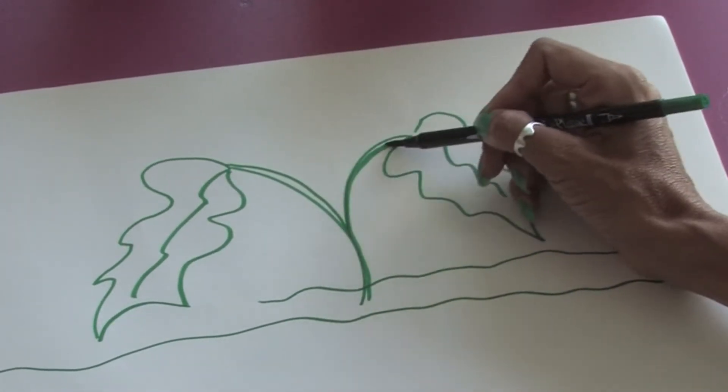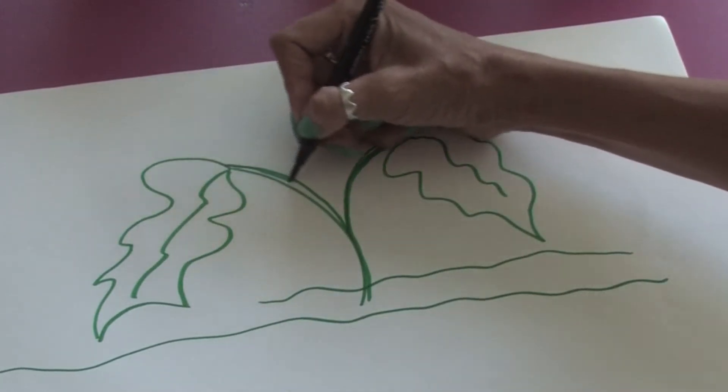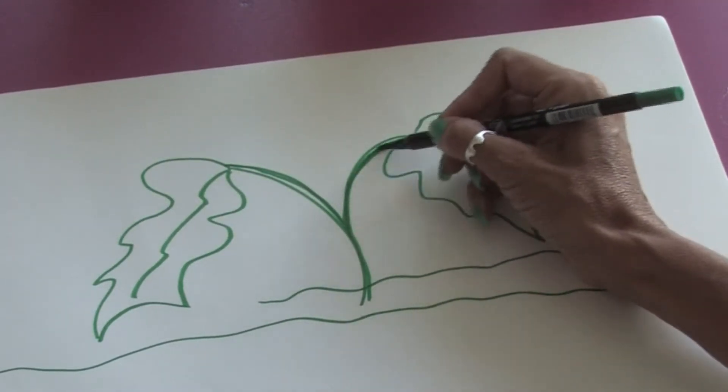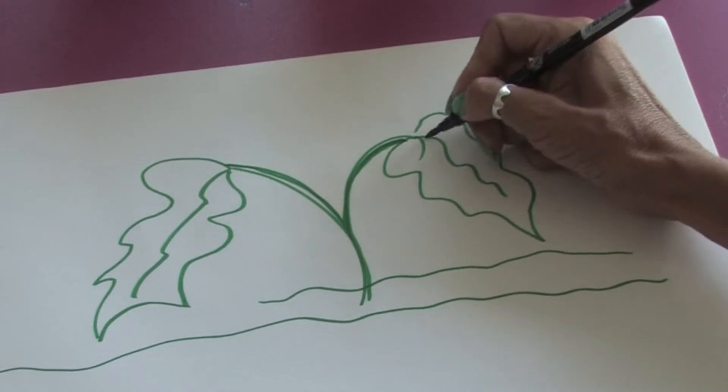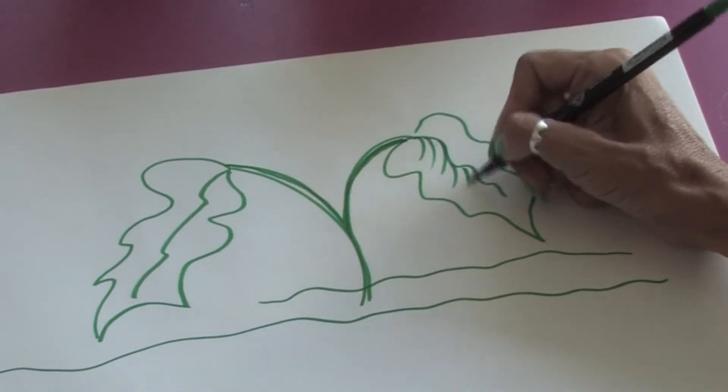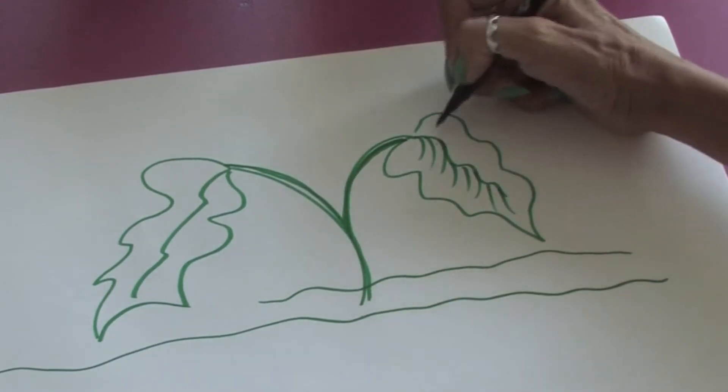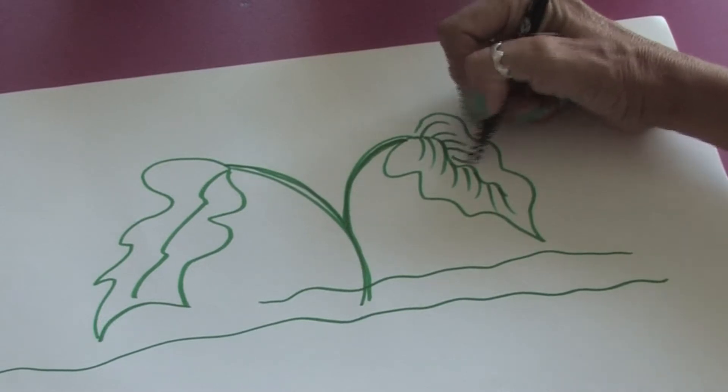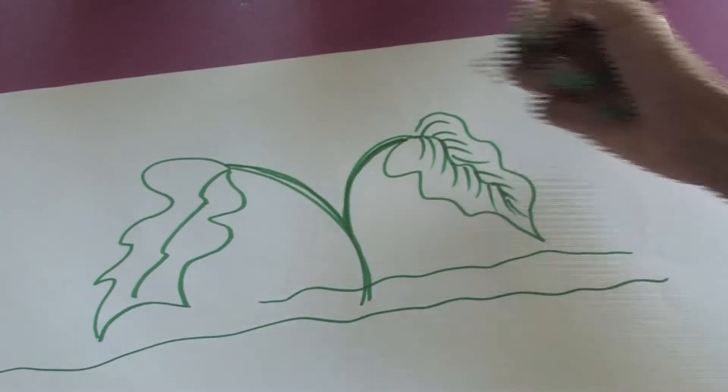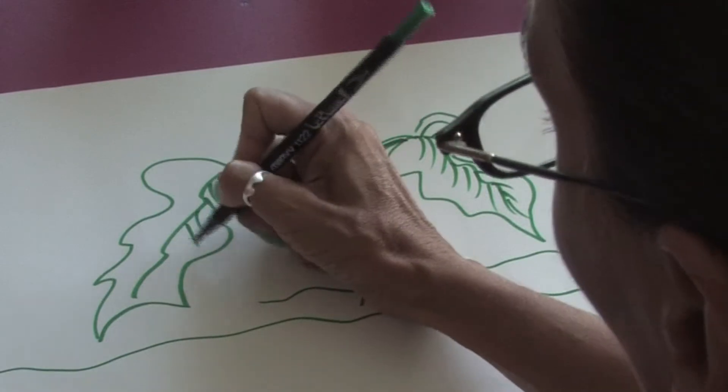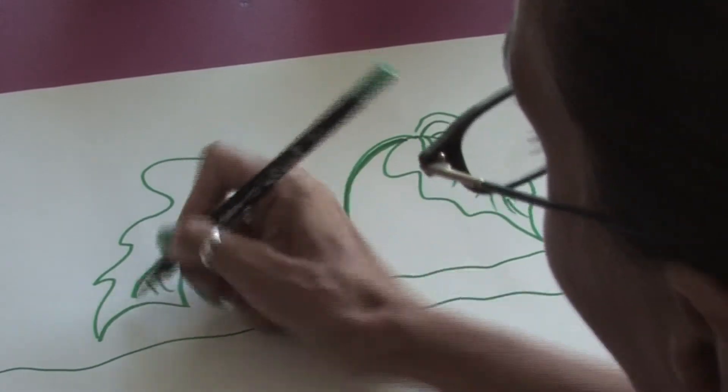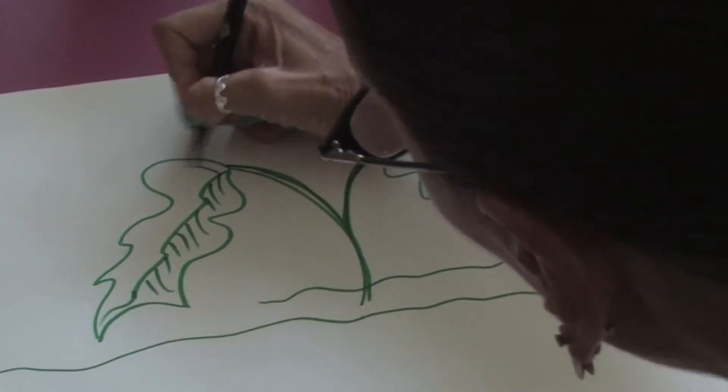And we're just going to add a couple more lines here. Then we're going to add some lines in on the leaves for the detail. Going to add a few more lines in here just for the detail so you get the idea of the leaves growing.